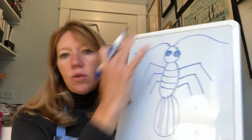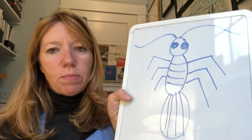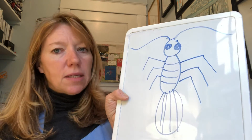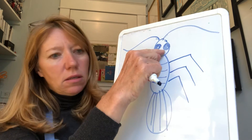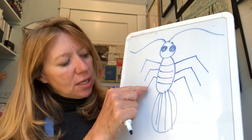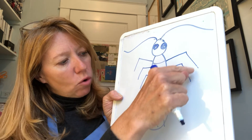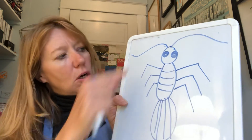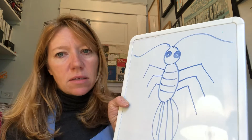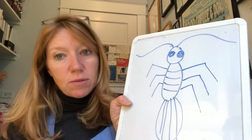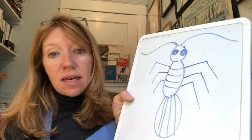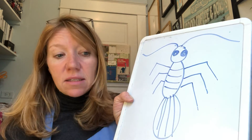I do not want you to copy this bug. You guys have much better imaginations than that. But when you're thinking about making your bug today, you do have to have a head, a thorax, and an abdomen. You need to have six legs. You should have some antennas and some eyes. The rest of it is totally up to you — it could have wings, it could have short antennas, it could have other designs. You can choose to draw it, or you can find things around your house and put them together to make a bug, kind of like we did with the face a couple weeks ago.